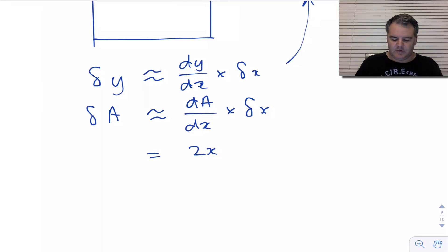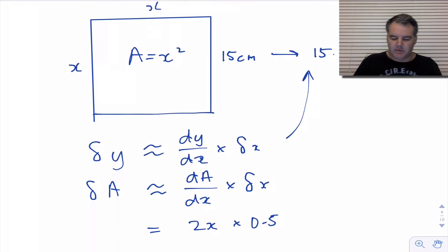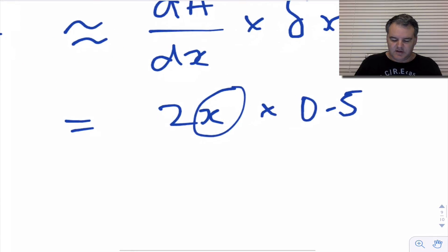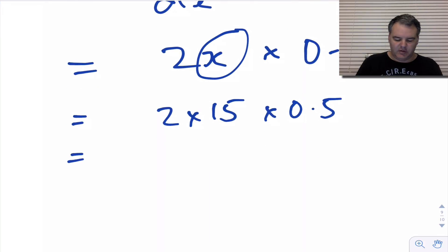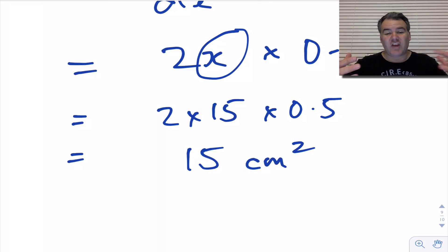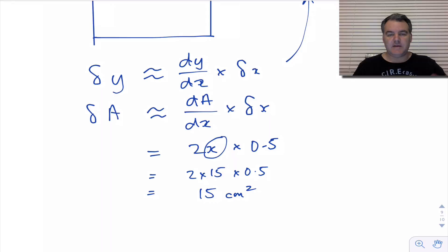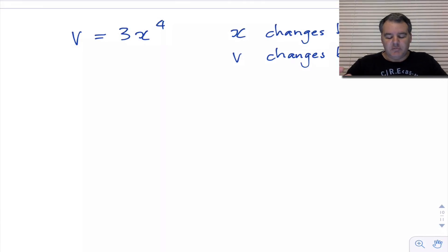We know that the area is x squared, where x is just the length of the side of the square, so dA/dx is 2x. Multiplying by the change in x, which is 0.5, and substituting x equals 15: 2 times 15 times 0.5 gives us 30 times 0.5 = 15 centimetres squared. So the approximate change in area when we increase the side length is about 15 cm².